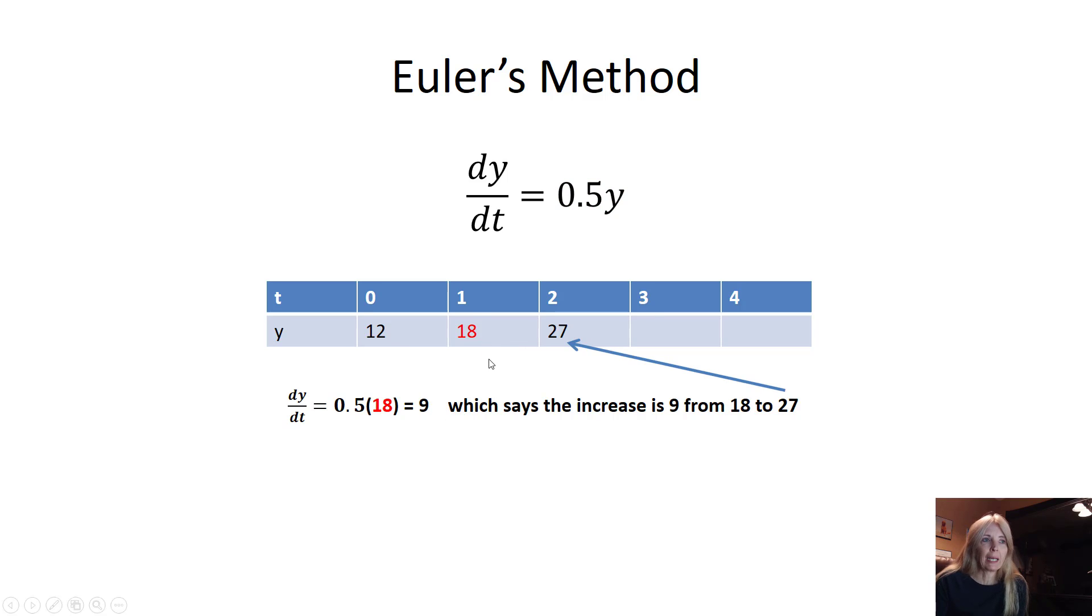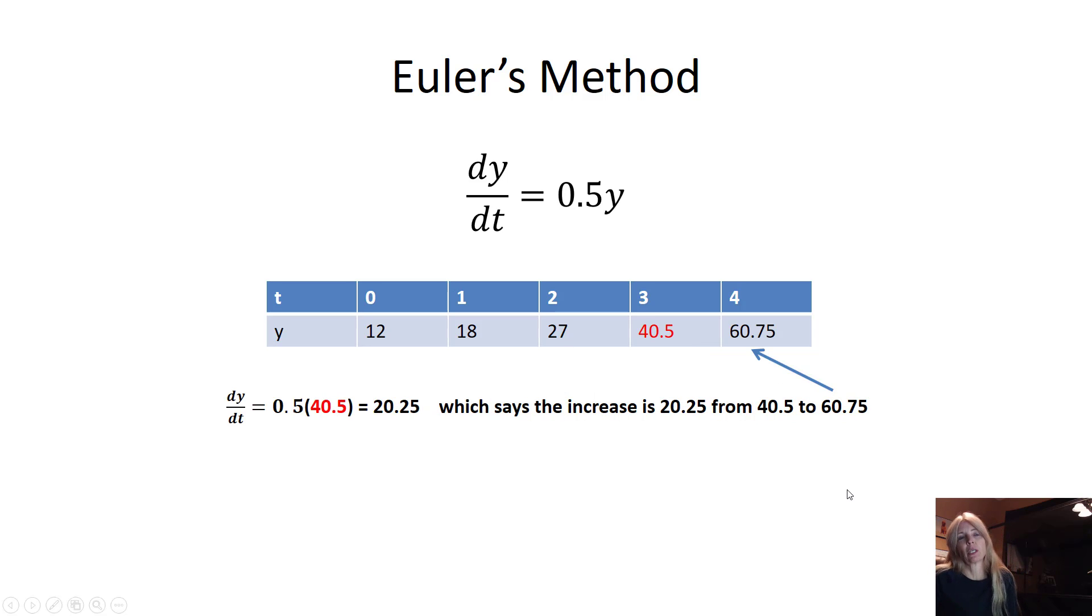I can go to my next one. I can plug in what y equals 18. I'm taking half of 18. I get 9. 9 plus 18, 27. And I continue to do this until I can fill up my table. So as you're going to see, if you cannot figure out a solution to the differential equation, you can plug in and do this update based on my value of my function, that the rate's changing, and approximate values with a table.